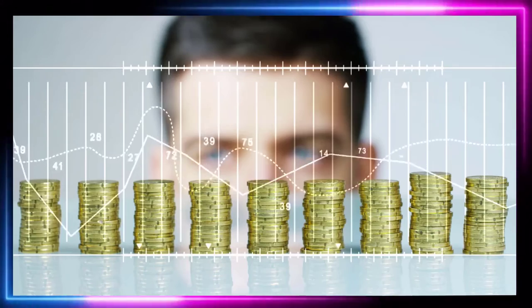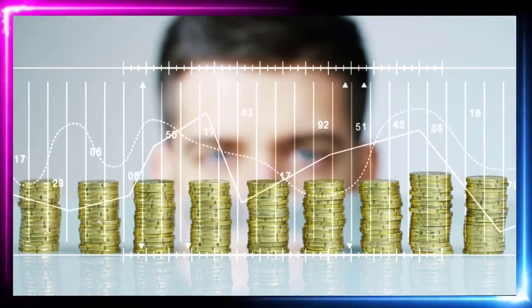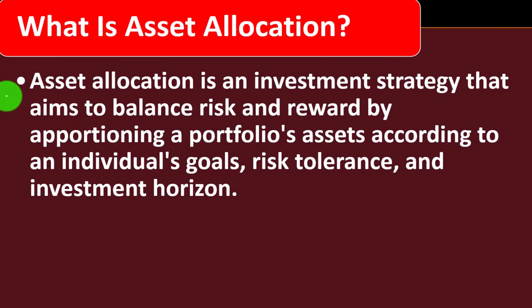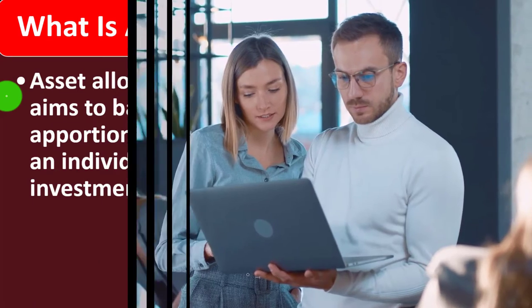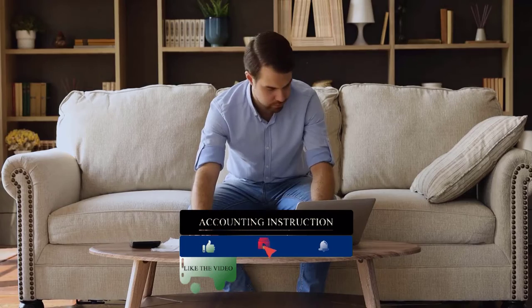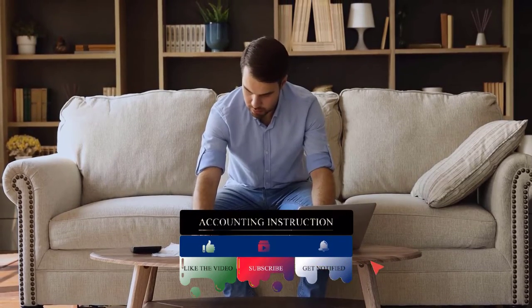In prior presentations we've been looking at investment goals, investment strategies, and different types of investment tools. Now we're considering: what is asset allocation? Asset allocation is an investment strategy that aims to balance risk and reward by apportioning a portfolio's assets according to an individual's goals, risk tolerance, and investment horizon.